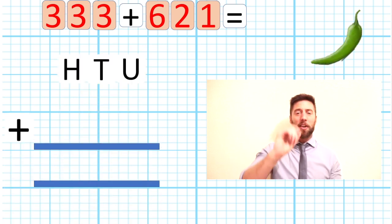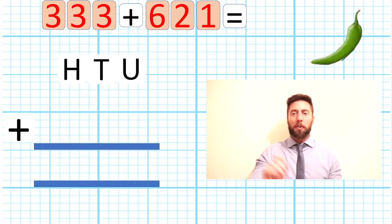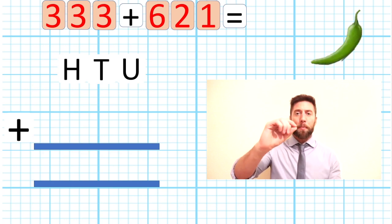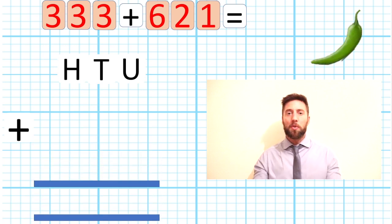So the first thing we always do when looking at anything in column method: we always set out our work neatly. So let's do it - units, tens, and hundreds. Put our equals bar across, our add sign for good measure to remind ourselves we are adding today, and we are good to go.